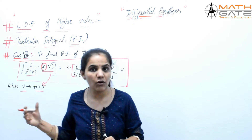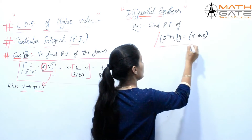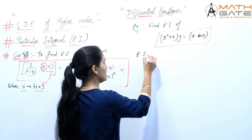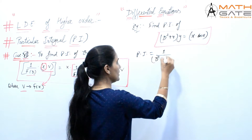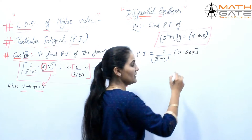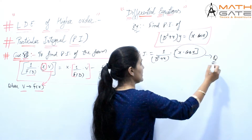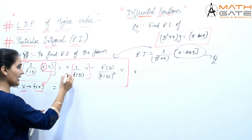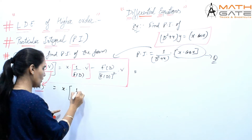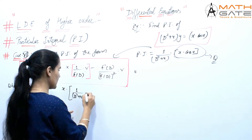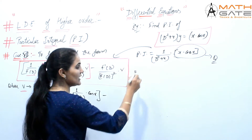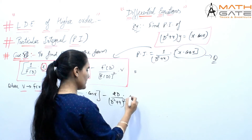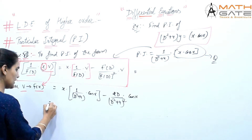Let's see the example: find the PI of (D² + 4)y = x·cos(x). So PI = 1 by (D² + 4) into x·cos(x). Here Q equals x·cos(x). Now we apply the Case 7 formula — x stays as it is: x times 1 by (D² + 4) into cos(x), minus F'(D) which is the derivative of D² + 4, that is 2D, divided by (D² + 4)² into cos(x).